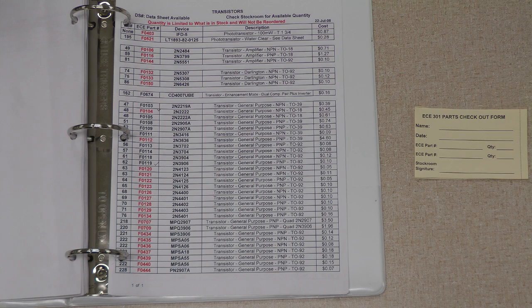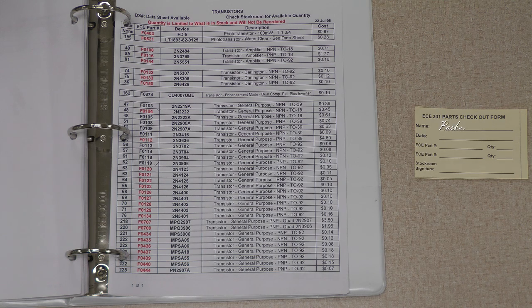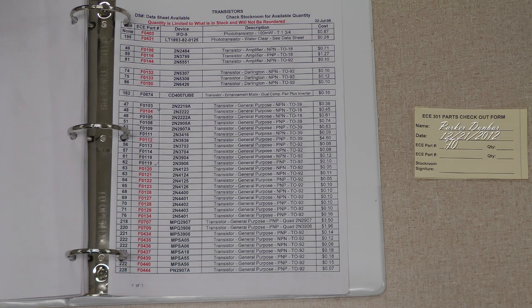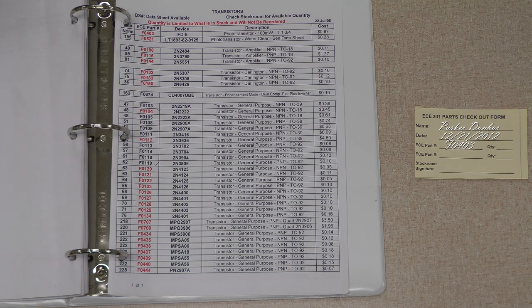The fields on the part checkout form are fairly straightforward. You simply need your name, date, the ECE part number, which you can find easily in the parts list, and the quantity of the parts you need.